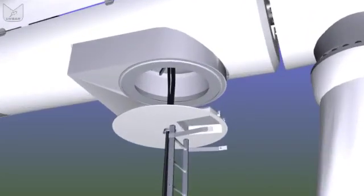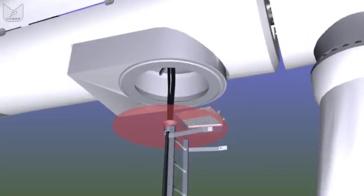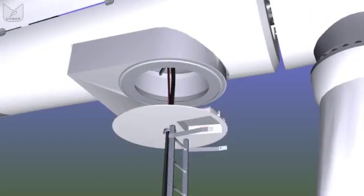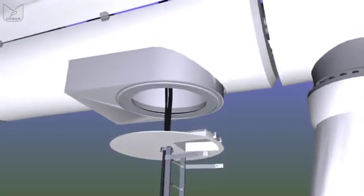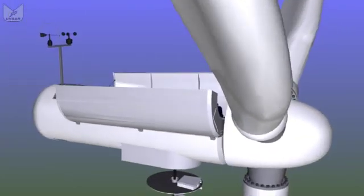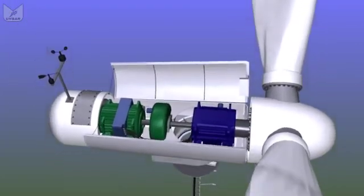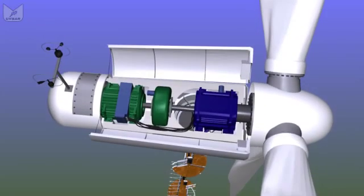Just above that we have the yaw ring, with the bearings that allow the nacelle and the rotors to rotate around to face the wind. And this sealed platform acts as a bit of fire protection, also avoids people falling back down the tower, because at the top of the nacelle we simply have a hole through which we climb.